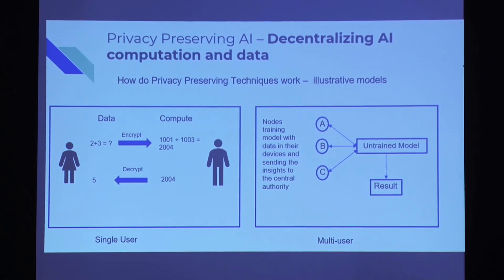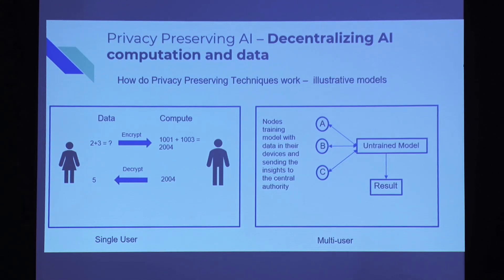Another approach is multi-party computation, used for multiple users. You have a central server with a model that is sent to more than one individual — three nodes in this case. These users have data on their local devices and use those devices to perform computation on that data, then send back only the changed parameters in the model to the central server, which then updates its AI model. This also has the twin benefit of utilizing computing more efficiently.